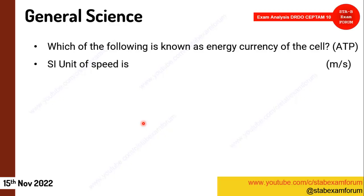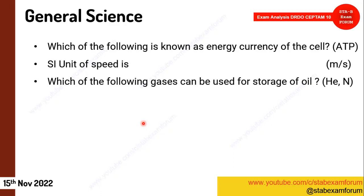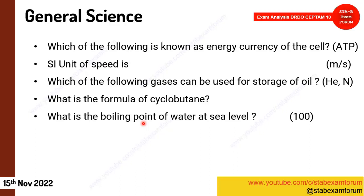The SI unit of speed is meter per second. Students, what we told you to prepare in our syllabus is much similar to what's appearing in General Science — you can check our video on general science. Which of the following gases can be used for storage of oil? The answer was helium and nitrogen. One question on the formula of cyclobutane.